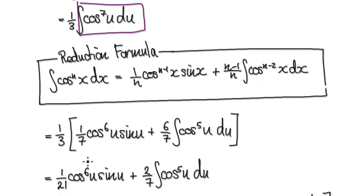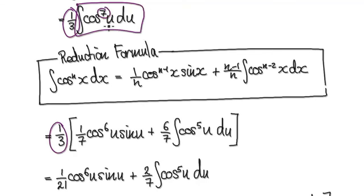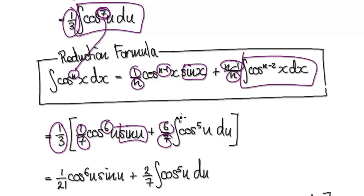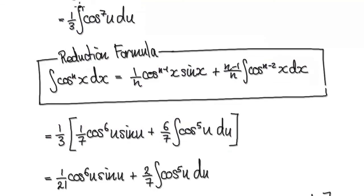Using the reduction formula, n will be 7. So using the reduction formula, it would be 1 over 7, cos 7 take away 1, that would be 6. And then you've got your sin here, and then it would be 7 take away 1, that would be 6. And then this would be 7 here. And then this thing would be this, because n is 7, 7 take away 2, that would be 5. So using the reduction formula, this whole thing here would then become this.